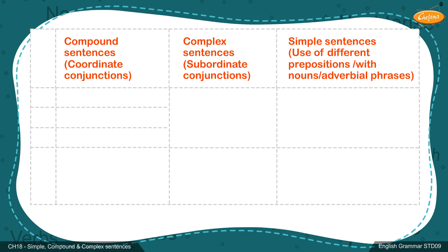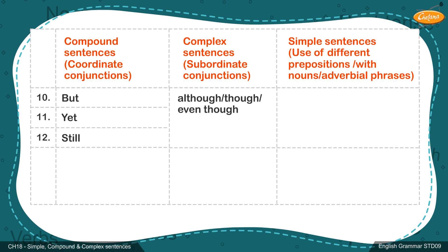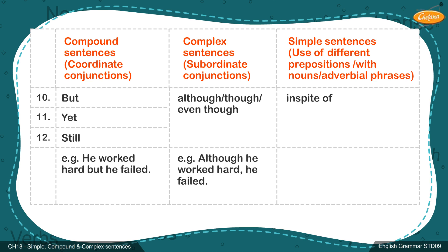Compound sentence conjunctions: 10. But. 11. Yet. 12. Still. Complex sentence conjunctions: Although, Though, Even though. Simple sentence: In spite of. Compound sentence example: 'He worked hard, but he failed.' Complex sentence example: 'Although he worked hard, he failed.' Simple sentence example: 'In spite of working hard, he failed.'